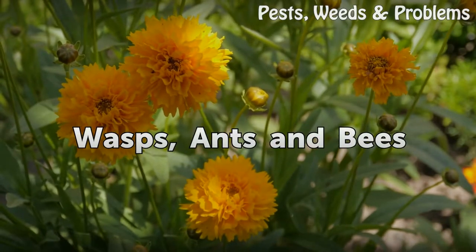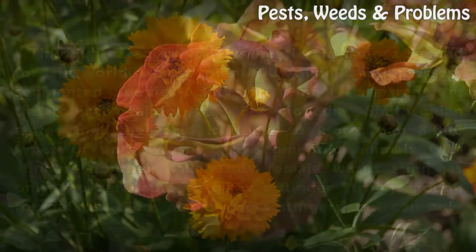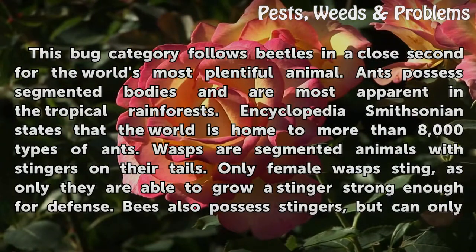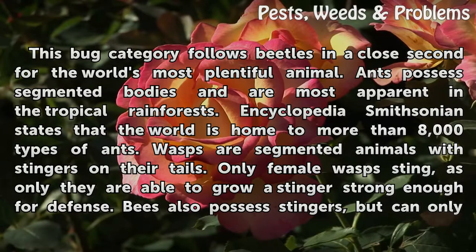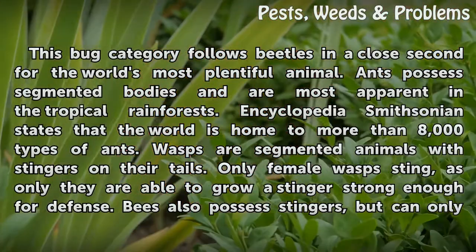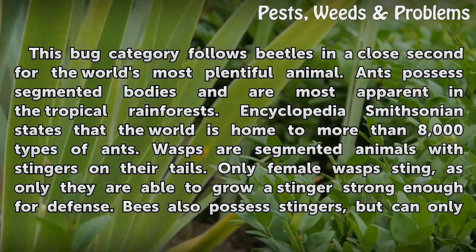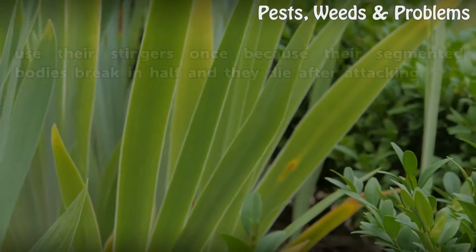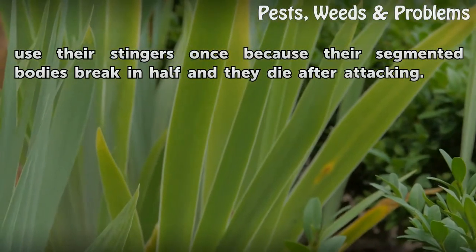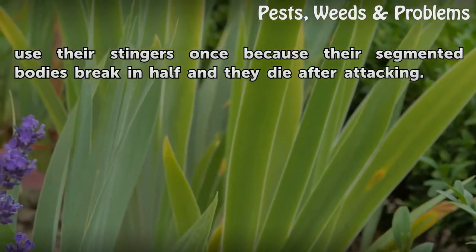Wasps, Ants, and Bees. This bug category follows beetles in a close second for the world's most plentiful animal. Ants possess segmented bodies and are most apparent in the tropical rainforests. Encyclopedia Smithsonian states that the world is home to more than 8,000 types of ants. Wasps are segmented animals with stingers on their tails; only female wasps sting, as only they are able to grow a stinger strong enough for defense. Bees also possess stingers, but can only use their stingers once because their segmented bodies break in half and they die after attacking.